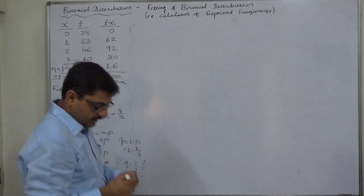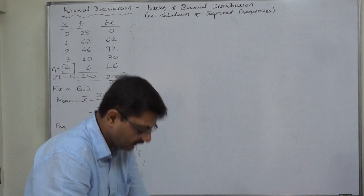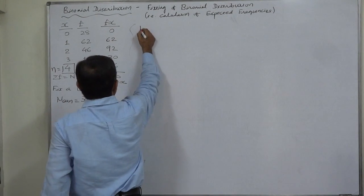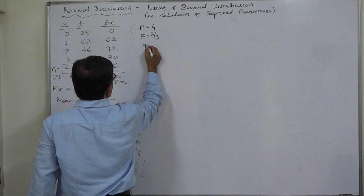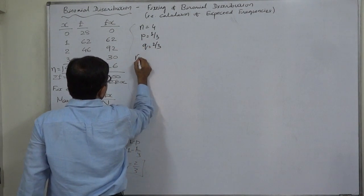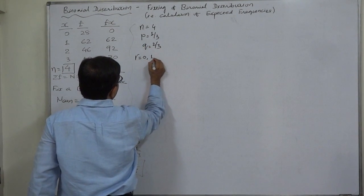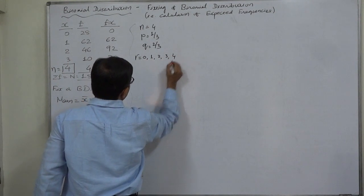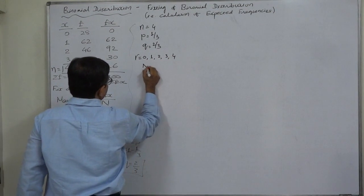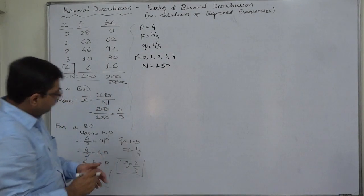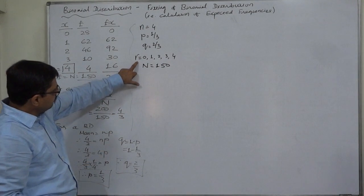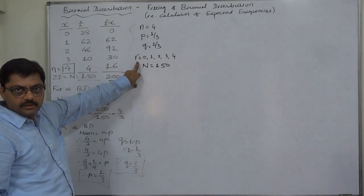So q comes to 2 by 3. Now we have parameters of binomial distribution, and they are n equals to 0, 1, 2, 3, 4 and capital N is 150. Now to fit a binomial distribution we have to calculate probabilities of all these 5.